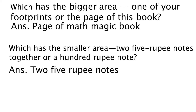Now you can see a question here. Which has the bigger area — one of your footprints or the page of this book? This book means your maths book. They are asking which one has a bigger area: your footprint or the page of your maths book? The answer is the page of Math Magic book. You can easily compare the area of your foot and the area of the page of the book and find out which one is bigger.